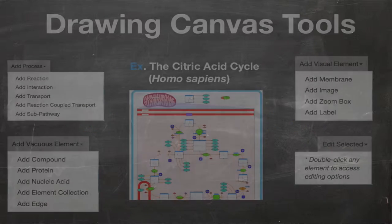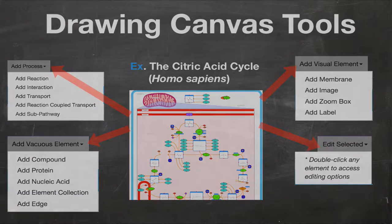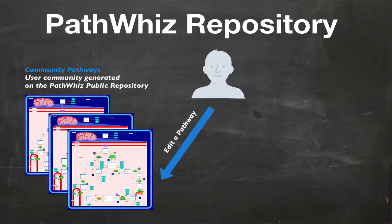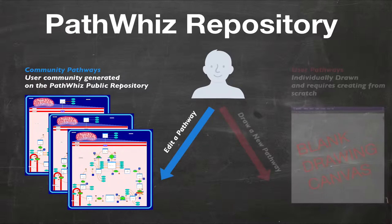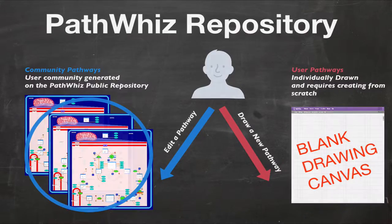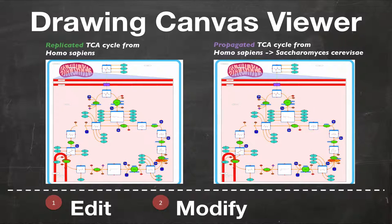The drawing canvas allows you to edit existing pathways or to create new pathways. Because PathWiz has so many pathways already generated by its user community, it is often easy to edit an existing pathway rather than creating one from scratch. For this video, we will work with the existing pathway. When viewing a newly replicated or propagated pathway in the drawing canvas viewer, we can edit, make modifications, and add components to it.